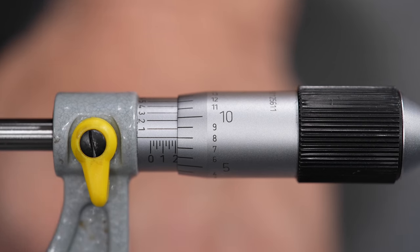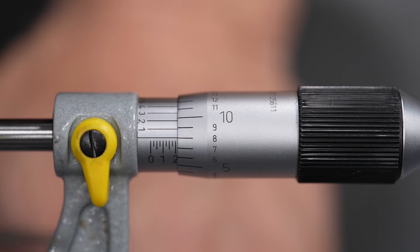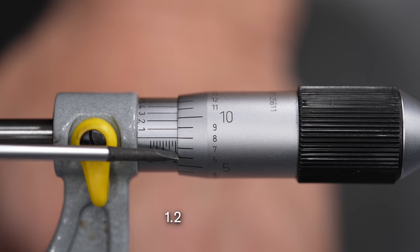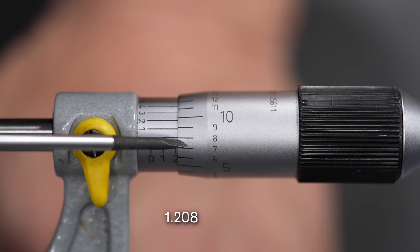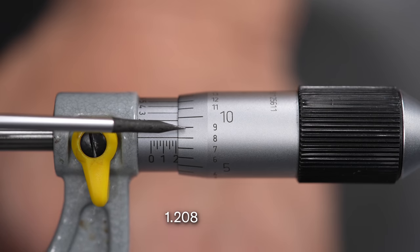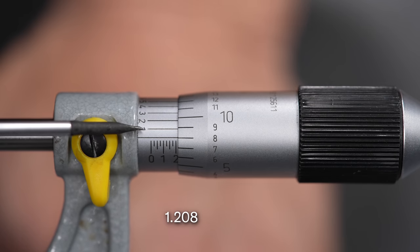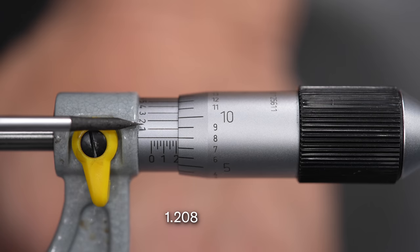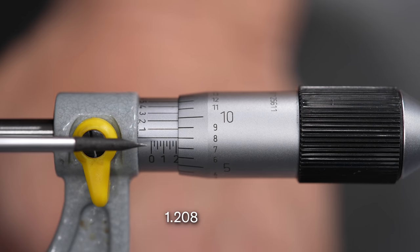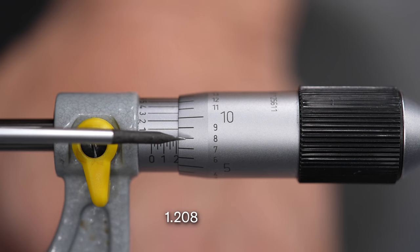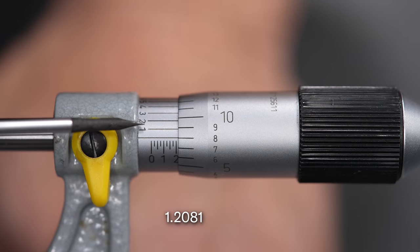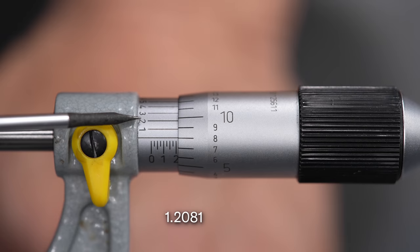For example, as our dial sits right now, we're at one inch, two hundred thousandths plus an eight for eight thousandths, so two oh eight, and it appears that the very next line lines up very well with one, so it would be one inch, two hundred thousandths, eight, one, so one point two oh eight one.